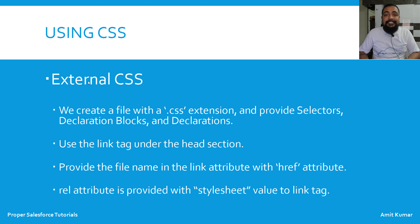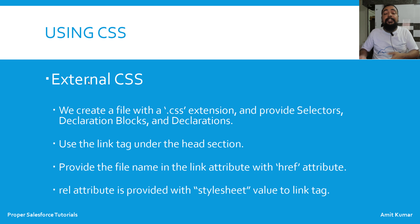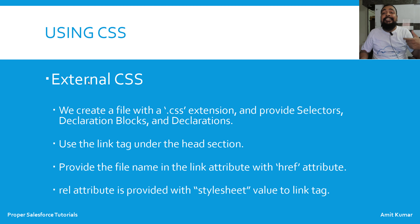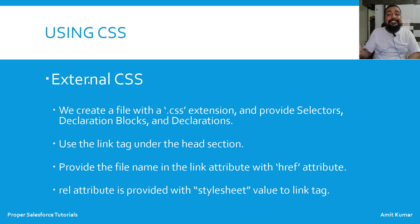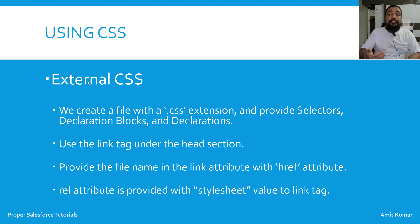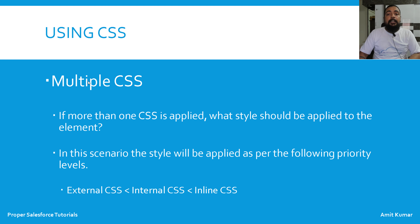The most usable form is external CSS. In this form we create a separate file with a .css extension and provide selectors, declaration blocks, and declarations inside that external file. Once that external file is created we link it to any HTML page using the link tag. Within the link tag we provide two attributes: the href attribute for the source of the CSS file, and the rel attribute with the value 'stylesheet'.